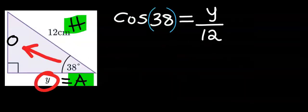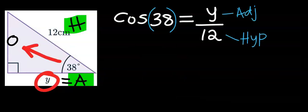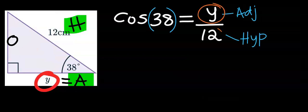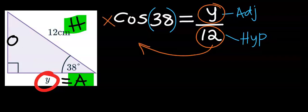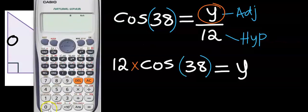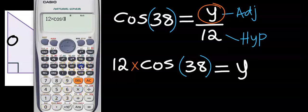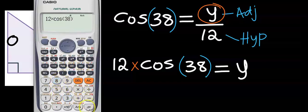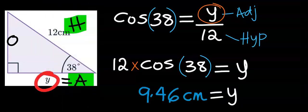We're going to substitute. Our cosine angle is 38. Next, we're going to isolate y, and 12 will move to multiply. Let's find the value of y: 12 multiplied by the cosine of 38. Then we're going to have 9.46 centimeters, which is the adjacent.